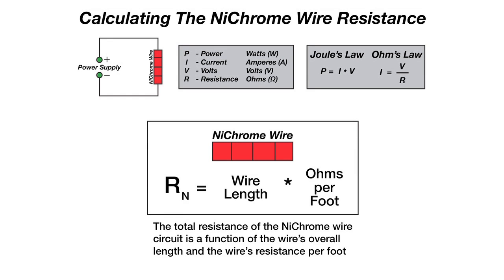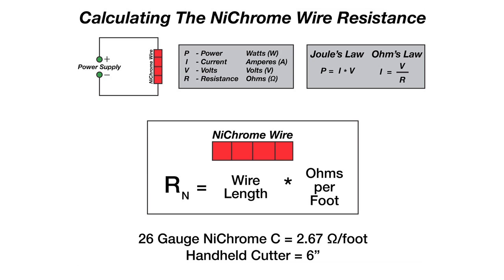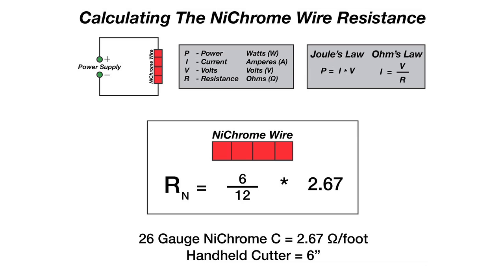Looking back at our equation, let's calculate the resistance for a 6 inch, handheld cutter that uses 26 gauge nichrome wire. You will note that 26 gauge nichrome wire is 2.67 ohms per foot. Plugging these values into the equation, remember that wire length is measured in feet. As there are 12 inches in a foot, you need to divide any length measured in inches by 12 before multiplying it by the wire resistance. With simple math, we've estimated the total resistance of a 6 inch, 26 gauge, handheld cutter to be approximately 1.34 ohms. Just remember that because there are other metal components in your actual handheld cutter, this estimate may be a little low, but it is fairly accurate.